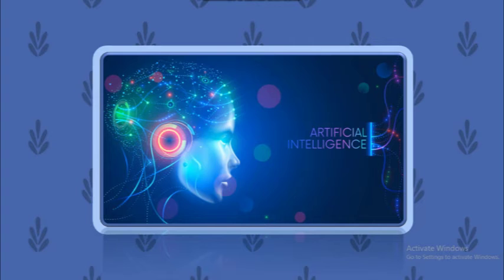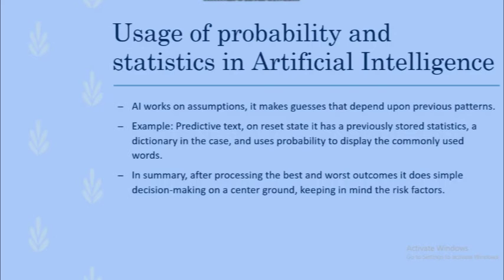Moving on to artificial intelligence, also well known as AI, it is one of the highest levels of enhancements and advancements towards the future. It is simply giving the machine the ability to think and act accordingly. AI works on assumptions, guessing what to do next according to either the statistics provided initially or gained after successful attempts or failures.